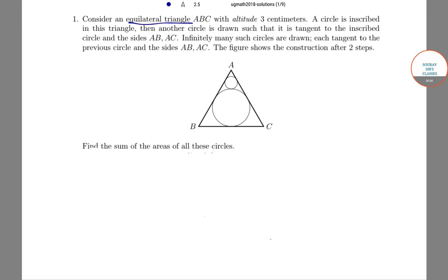Consider an equilateral triangle ABC with altitude 3 cm. A circle is inscribed in this triangle, then another circle is drawn such that it is tangent to the inscribed circle and the sides AB, AC.